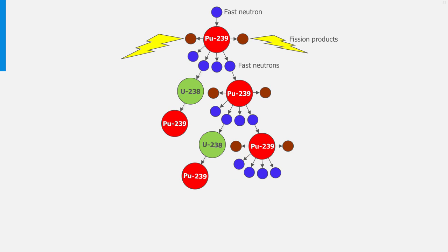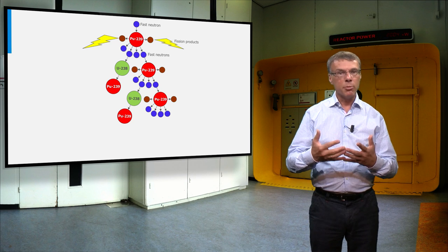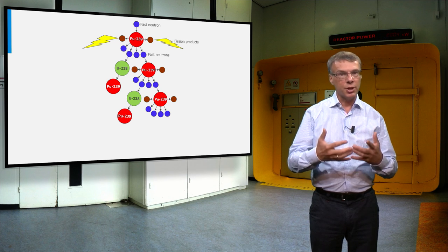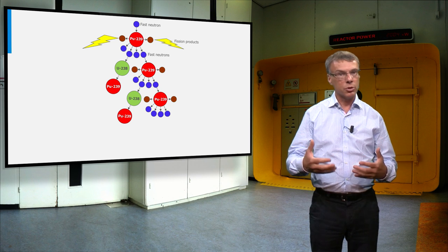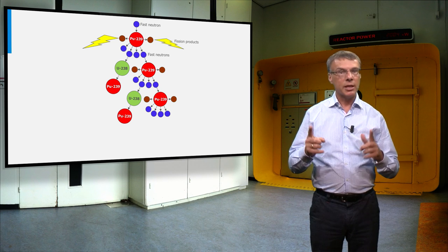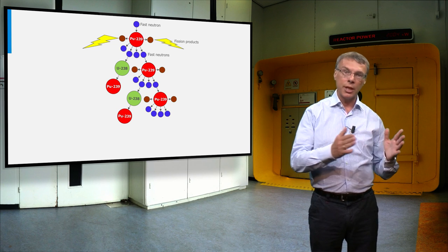Now imagine we would use plutonium-239 right from the beginning of reactor operation. In that case we have many more fission neutrons in each generation, and the possibility to breed more plutonium than we consume. We have then made a fast breeder reactor that produces more plutonium than it consumes.